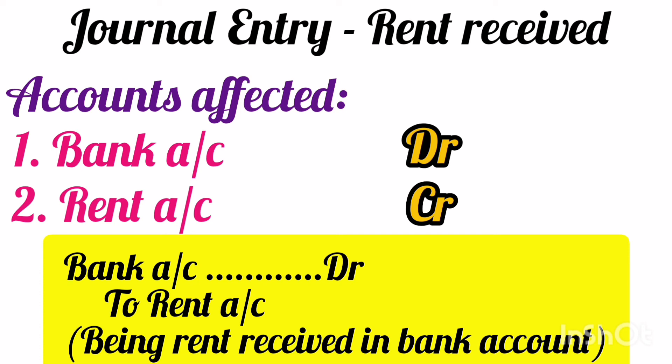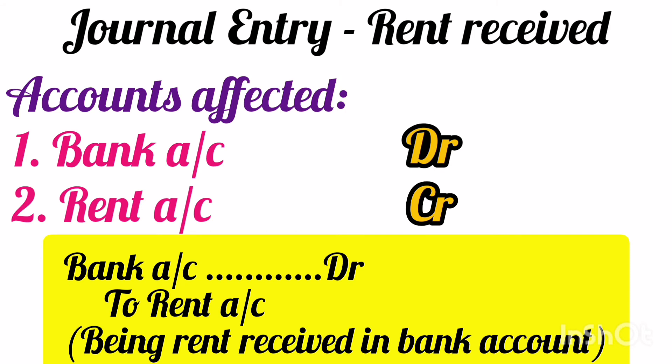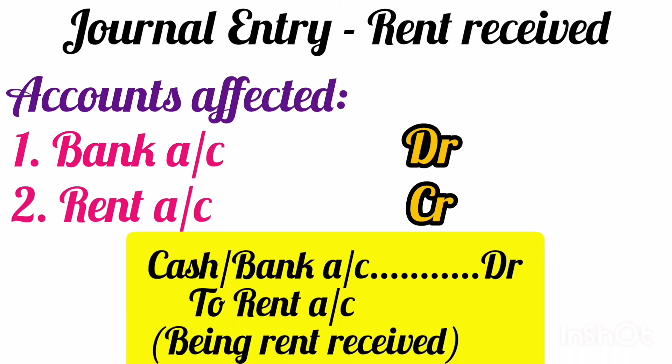You can frame the narration in your own words. Suppose it is not specified as to how we have received the rent. In that case, the journal entry will be cash/bank account debit to rent account. Since we don't know how the amount is received — whether in cash, by check, or by direct deposit in the bank account — we will debit the cash/bank account. And the narration to write is: being rent received. Since you don't know how the rent is received, you need not mention whether it is cash, check, or direct deposit in the narration.